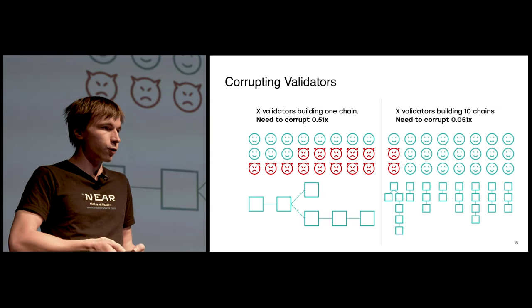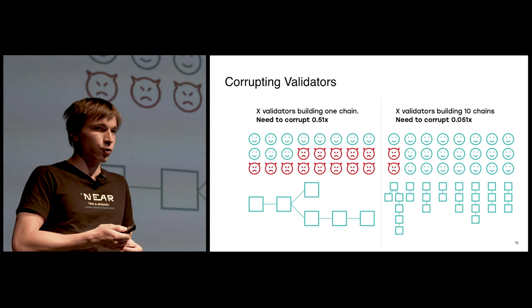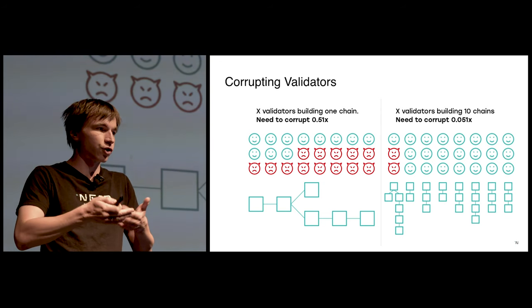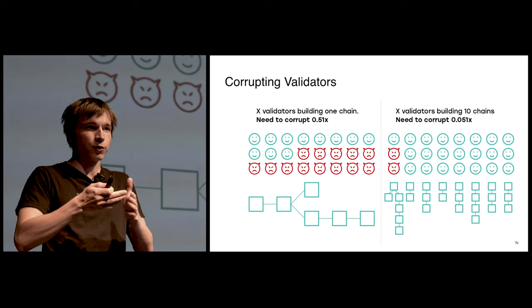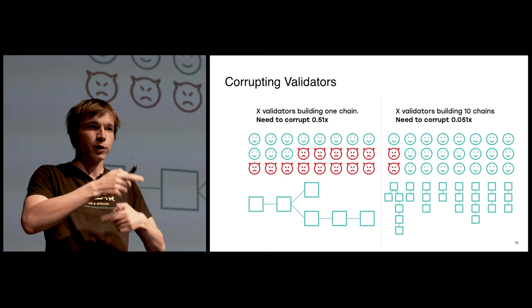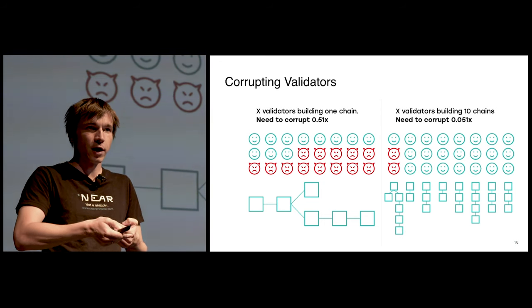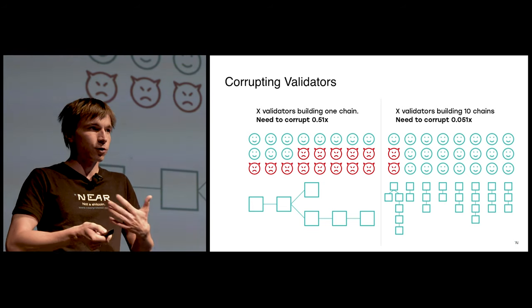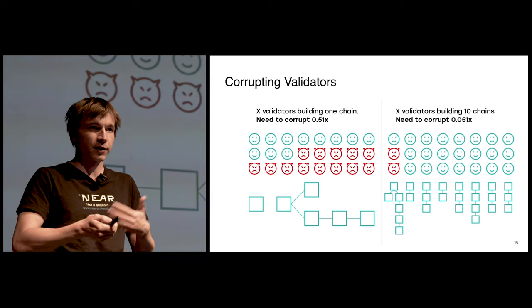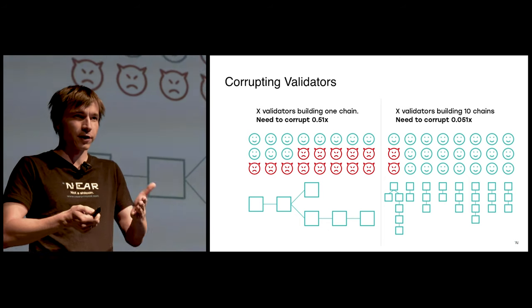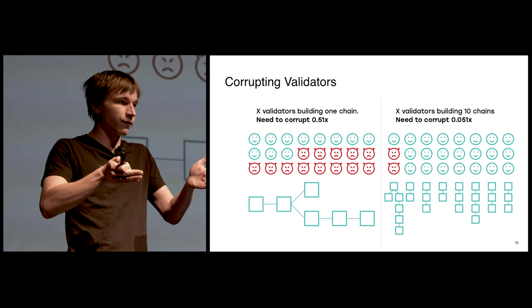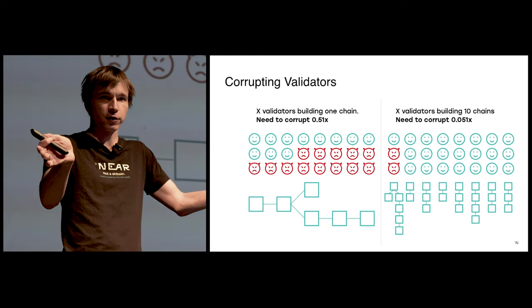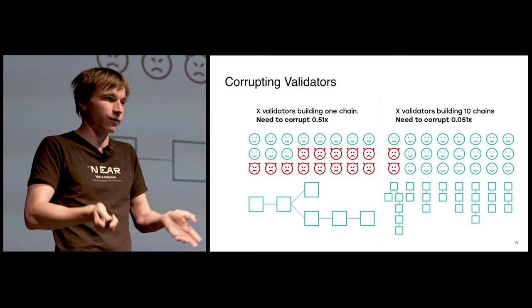So the most common solution to this problem is to rotate the validators. We will assign validators to shards. So let's say every shard has 100 validators. They will produce a few blocks, and then we will completely reshuffle them. Now, first of all, I don't have control where my validation power goes, but also I cannot really corrupt someone unless I can corrupt very fast. Unless I can corrupt them during the time frame while they're validating the shard, by the time I corrupt them, they already got reshuffled. And at that point, they belong to different shards.